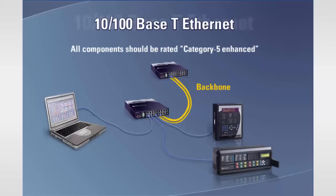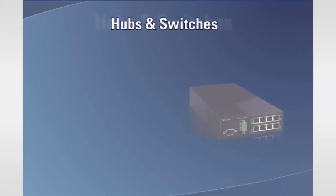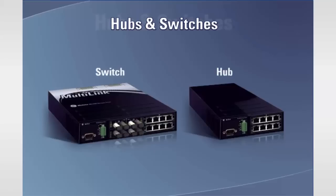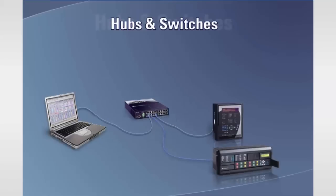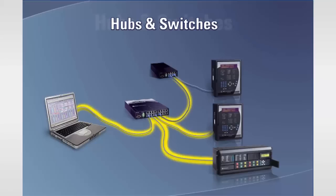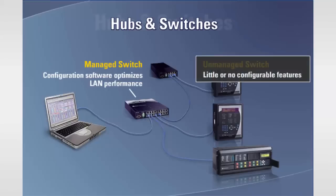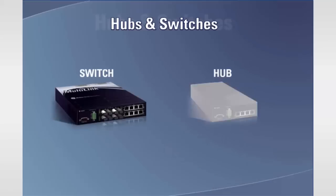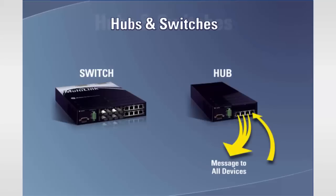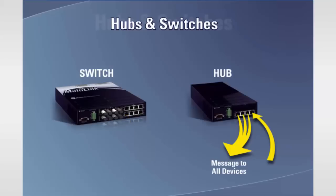Two of the major Ethernet network components are hubs and switches. You can think of either a hub or a switch as a big data manifold with connections for devices and other switches or hubs to exchange data. Hubs and switches are microprocessor-based, and many switches have configuration software to optimize the LAN's performance — these are called managed switches. Other switches have default configurations with little or no configurable features, which are called unmanaged switches. Hubs just transfer information from one port to all other ports. Switches, on the other hand, can learn the location of specific devices and route messages to them, thereby reducing data traffic on the network. Switches also have the capability of buffering messages, which eliminates collisions on a full-duplex Ethernet LAN.